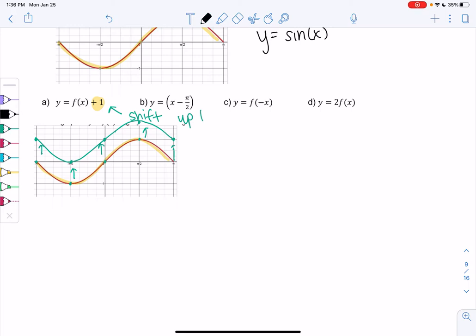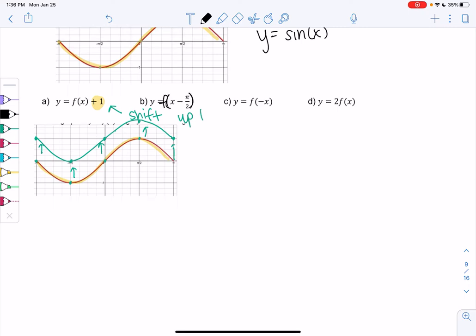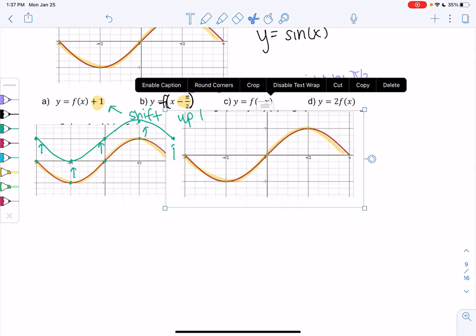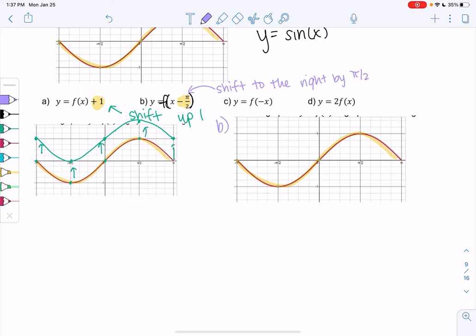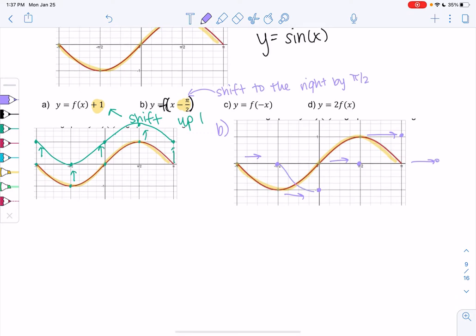All right, b, we have y equals f(x minus pi over 2). So that's an inner move, which means it's horizontal. So we learn negative is shifting to the right, so we're going to shift to the right by pi over 2. So I'm going to copy the graph again. So for b, we're going to go to the right by pi over 2. So at negative pi, we're going to go over to negative pi over 2. At negative pi over 2, we're going to shift over to 0, right? Because negative pi over 2 plus pi over 2 is 0. So every point just shifts over. So again, we're going to have the same curve, just slightly to the right. And that was a horizontal transformation.